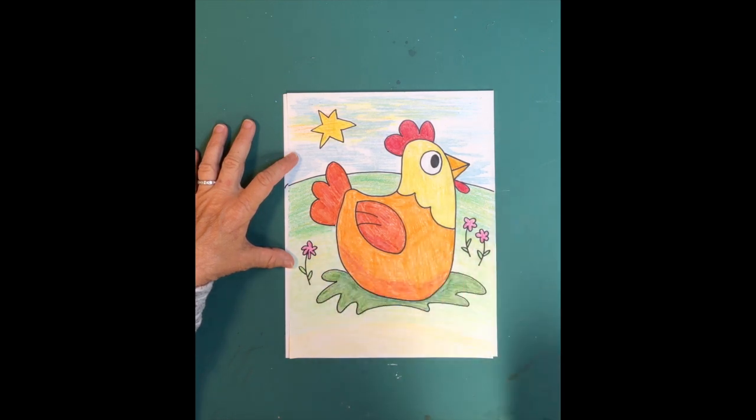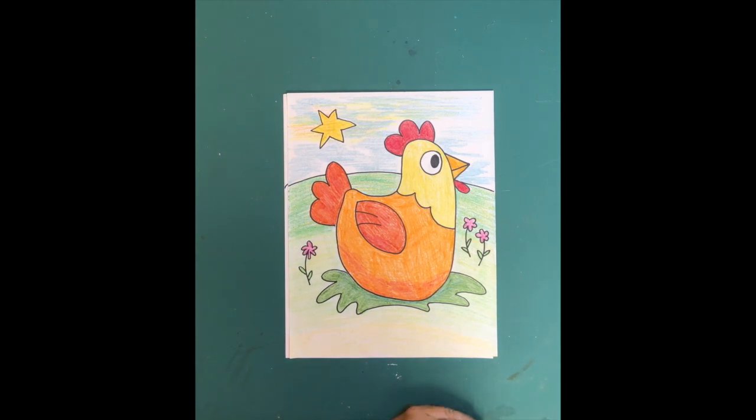And she's on a green meadow behind her. And she's just sitting there, probably sitting on some eggs, just a happy chicken. So I hope you had fun doing her. That was fun. And here she is. Here we go.